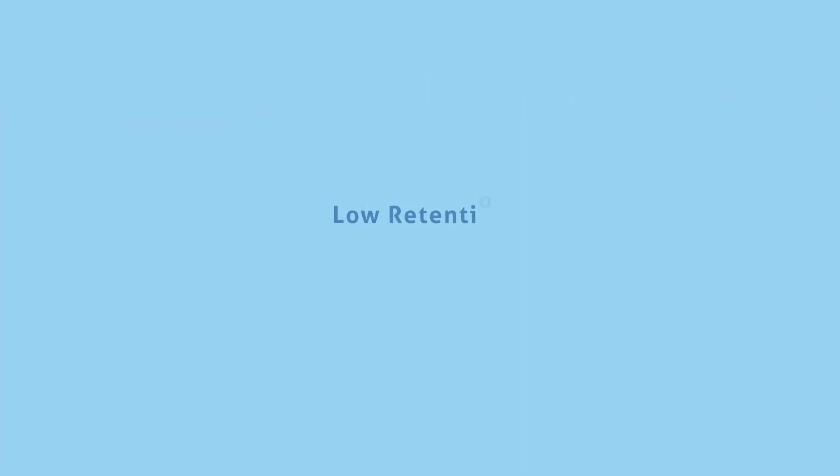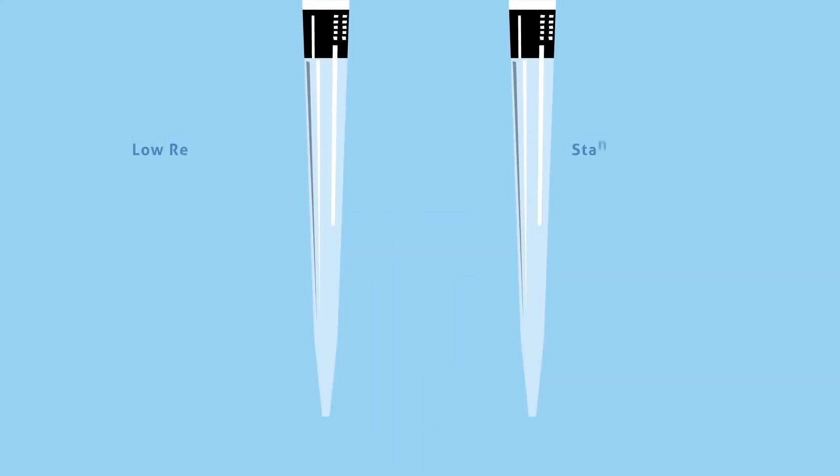When using air displacement pipettes, all the liquid in the pipette tip is part of the measured volume. Even with very smooth surfaces, standard tips tend to retain small amounts of liquid, especially when working with sticky samples like DNA and proteins.